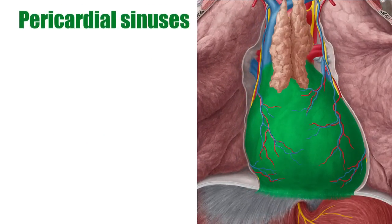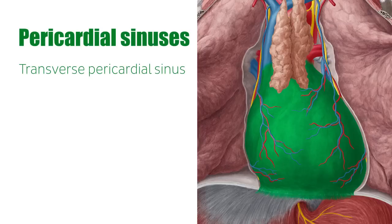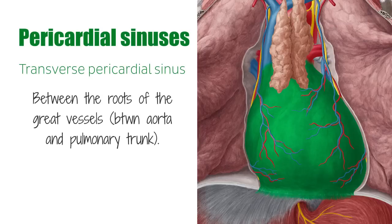Two sinuses exist within the pericardial cavity: the transverse sinus and the oblique sinus. The transverse pericardial sinus extends transversely across the pericardium, in between the roots of the great vessels, between the aorta and the pulmonary trunk.